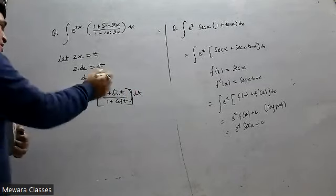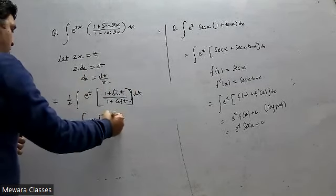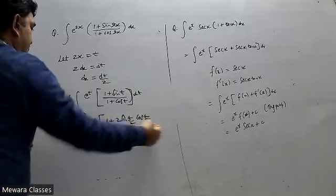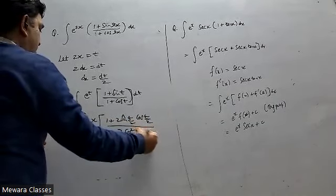Now after that, what we have to do, just like we did before: 1 plus sin t is 2 sin t by 2 cos t by 2, and 1 plus cos 2t is 2 cos square t by 2.